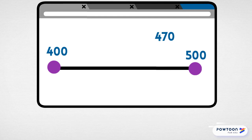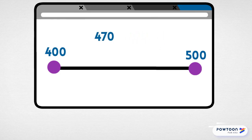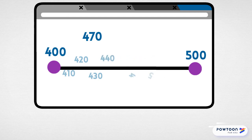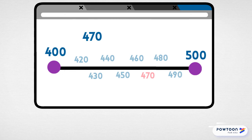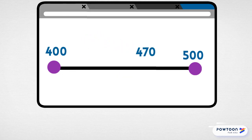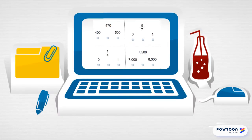I think counting by tens might be a good way to figure this one out. So after 400, it goes 410, 420, 430, 440, 450, 460, 470 — that's our number — then 480, 490, then 500. Now I can see that 470 is closer to 500. We figured this out with the number line, so now I can place my dot right under the 500 because I know that 470 is closer to 500.